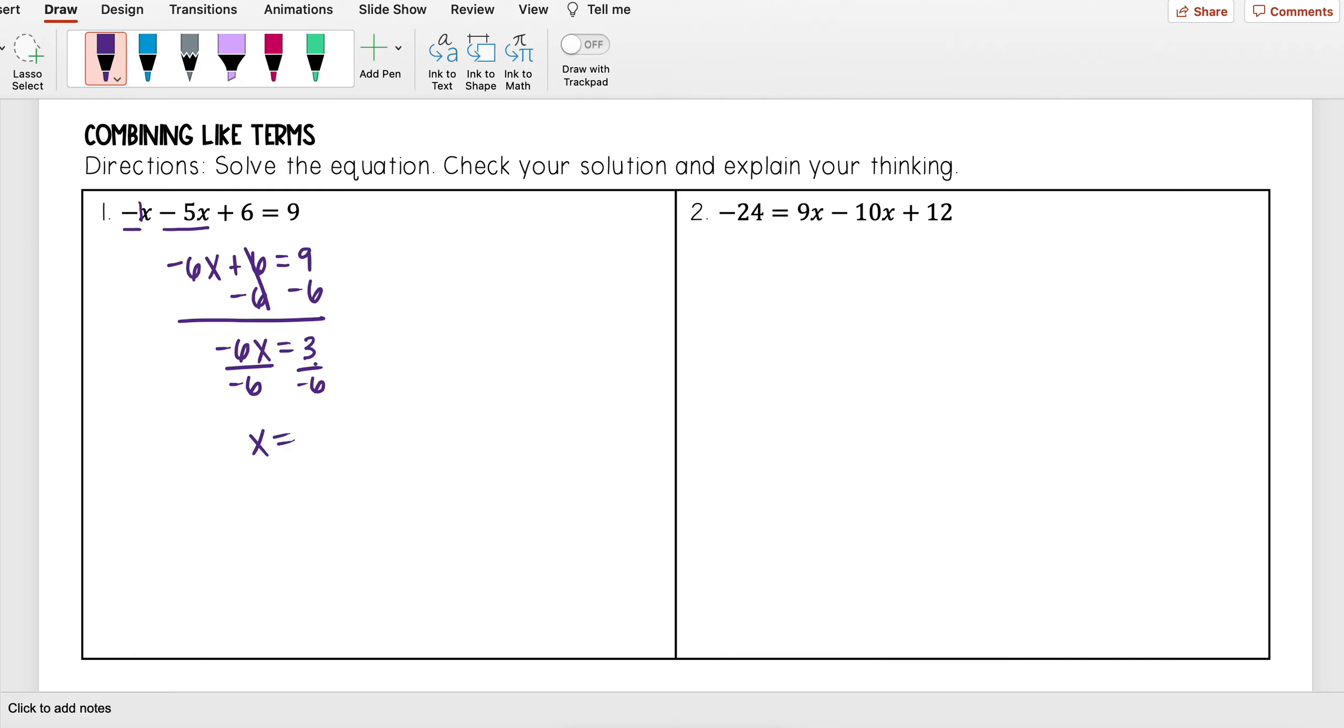So I get x is equal to, you have a couple options here. You first could go ahead and keep this as a fraction by dividing top and bottom by 3, and you get negative 1 half. Or you could go ahead and change this to being a decimal and write it as negative 0.5. Either way, it will be okay.